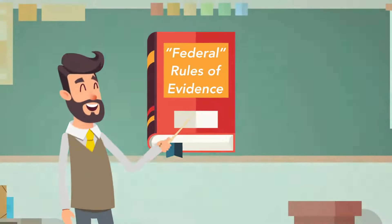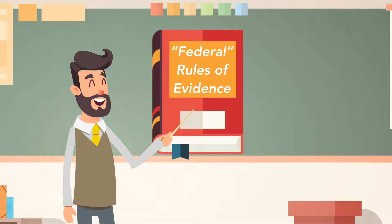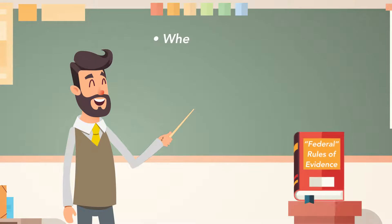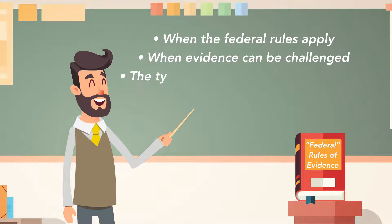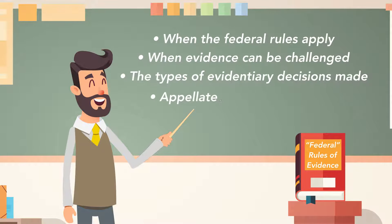In this module, we will introduce the federal rules of evidence. We will discuss when the federal rules apply, when evidence can be challenged, the types of evidentiary decisions made, and the appellate standards of review.